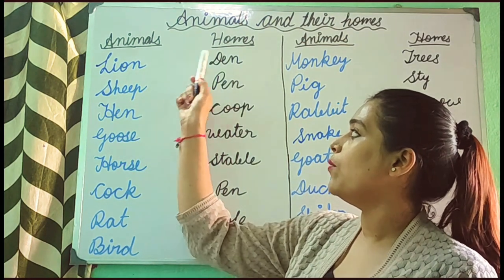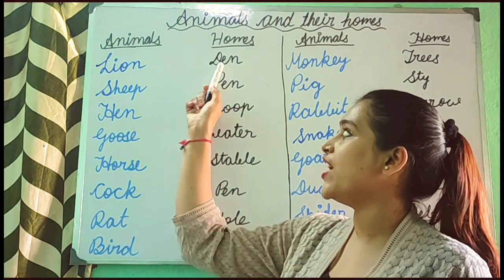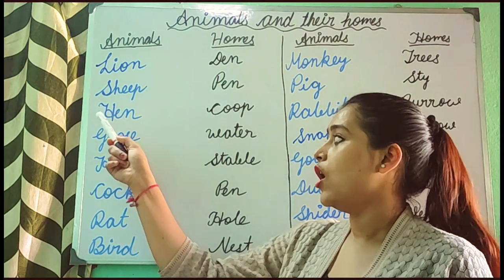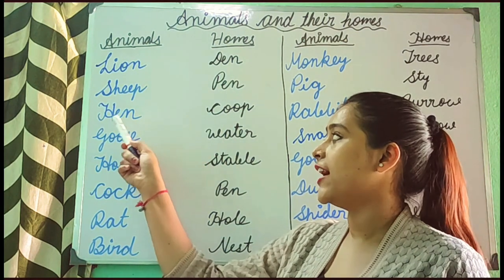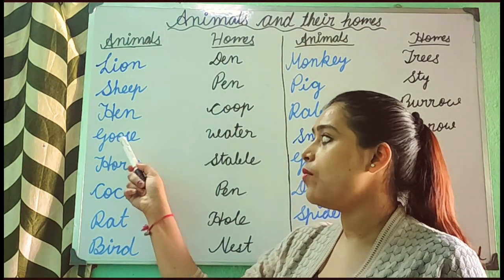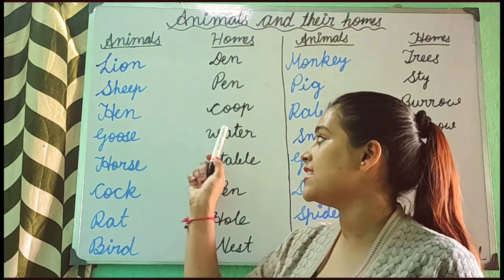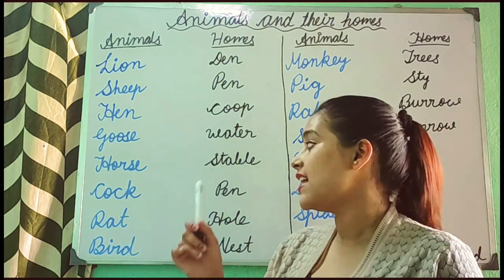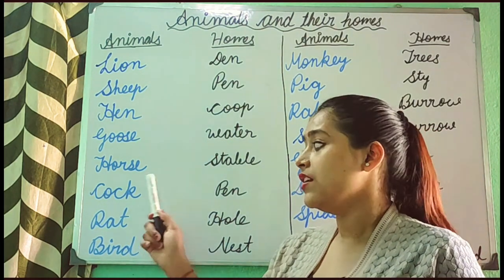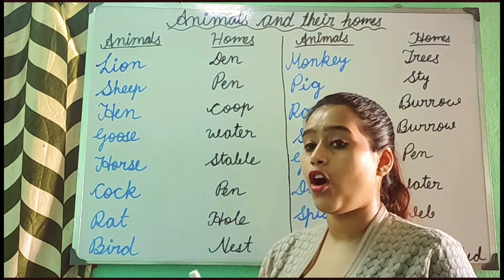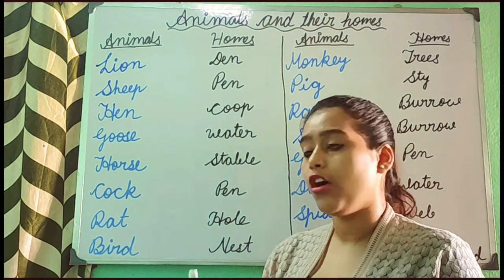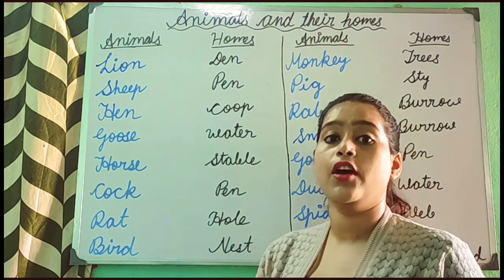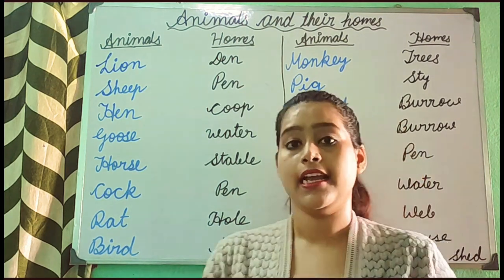Once again I am repeating. Lion — the home of a lion is dame. The home of a sheep is pig. Home of a hen is coop. The home of a goose is water. Home of a horse is stubble. The home of a cock is pig. The home of a rat is hole. And the home of a bird is nest.